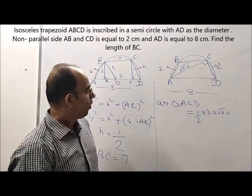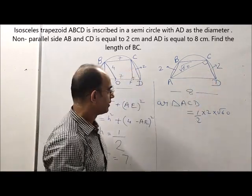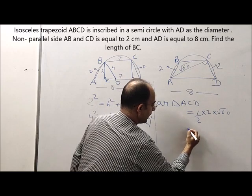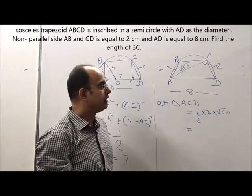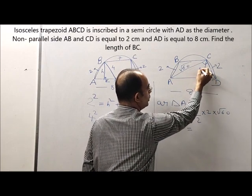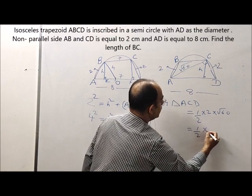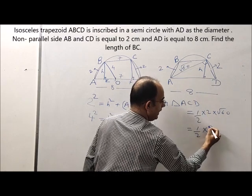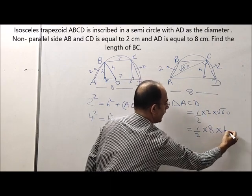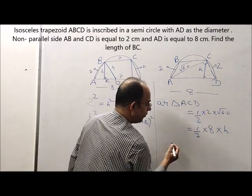Now we can also equate the same area by taking AD as the base. Then the area is again equal to the same triangle ABC. We need to drop a perpendicular on the base. Let us assume it to be H: half into AD, this is 8, into H.